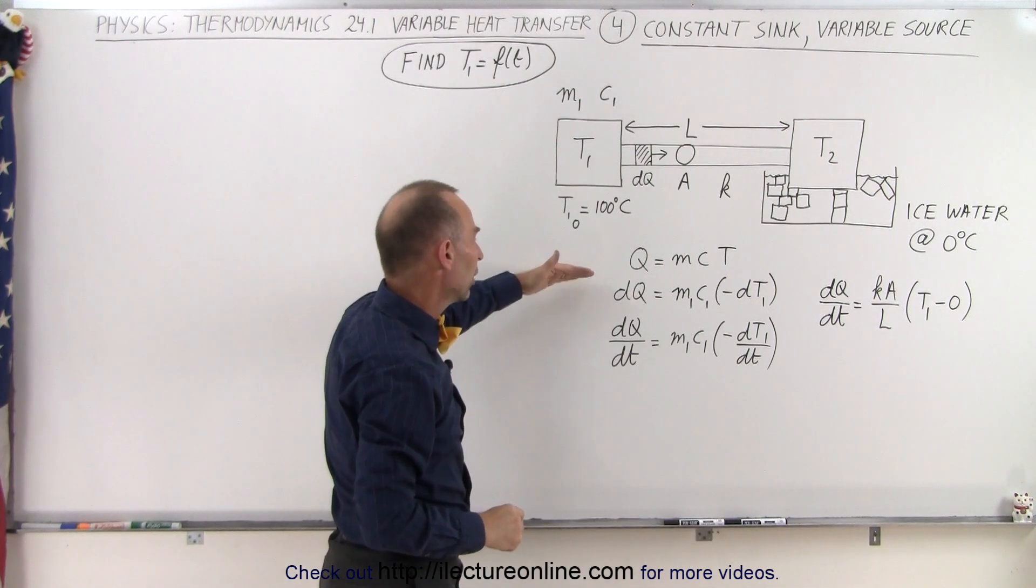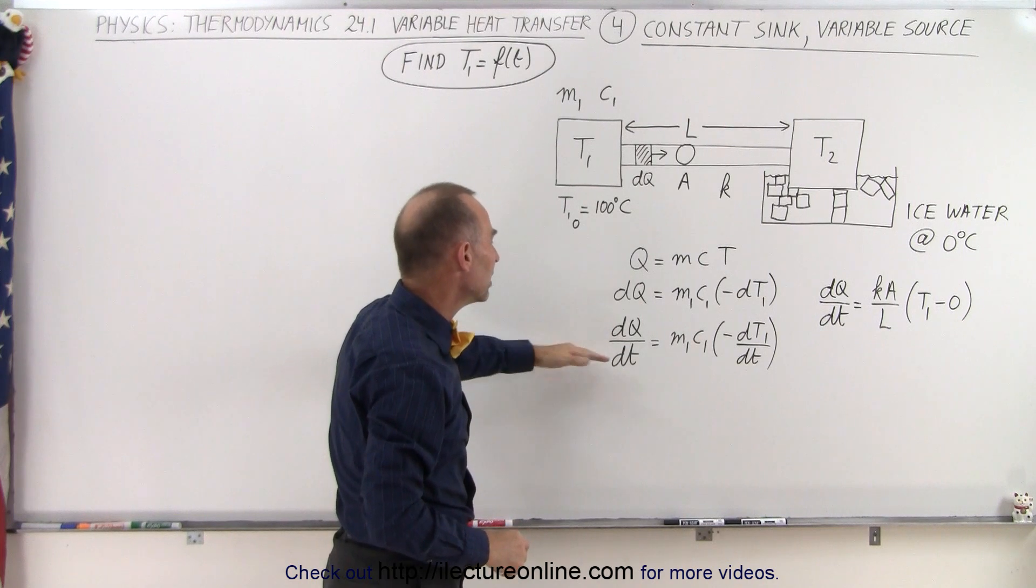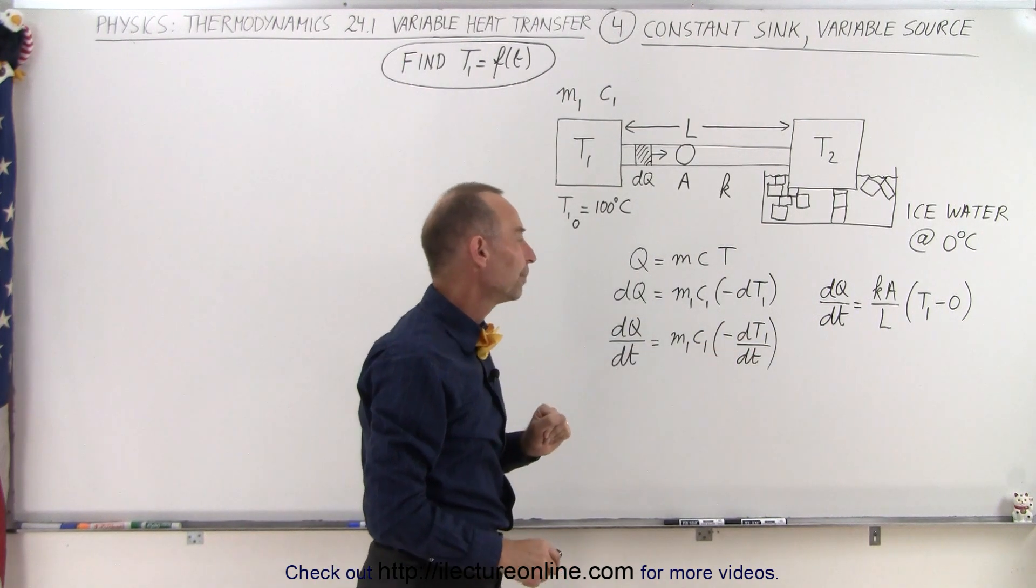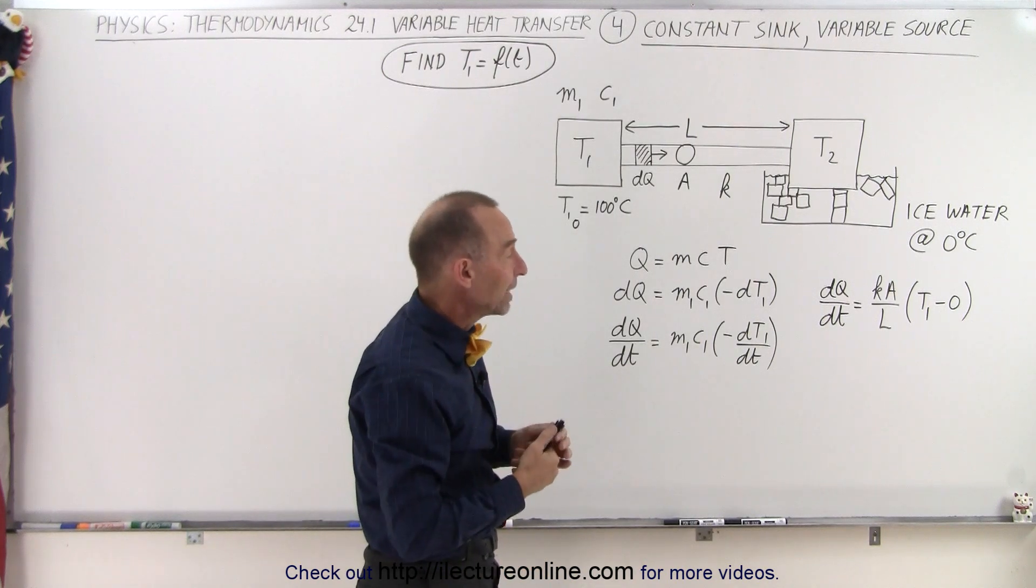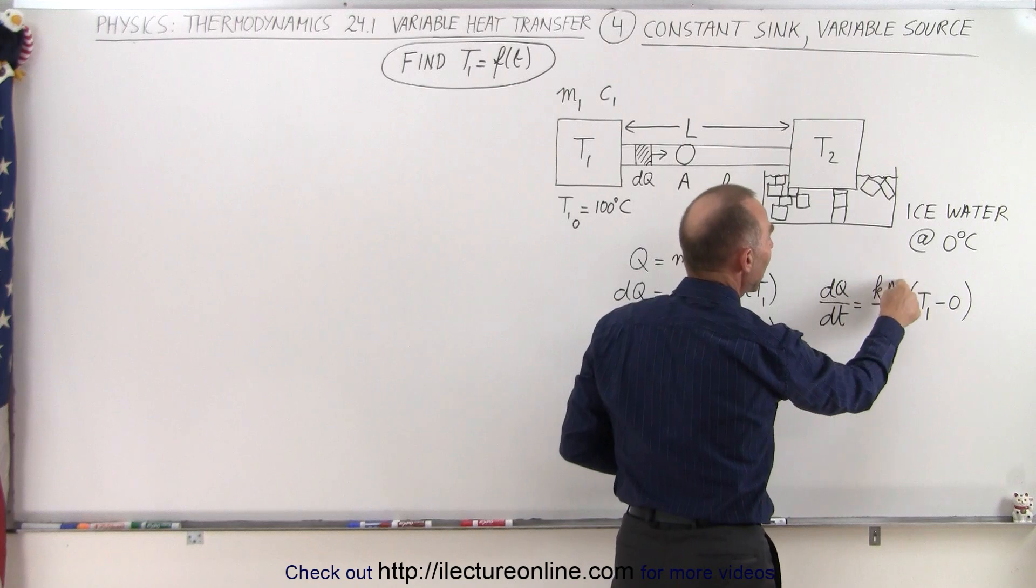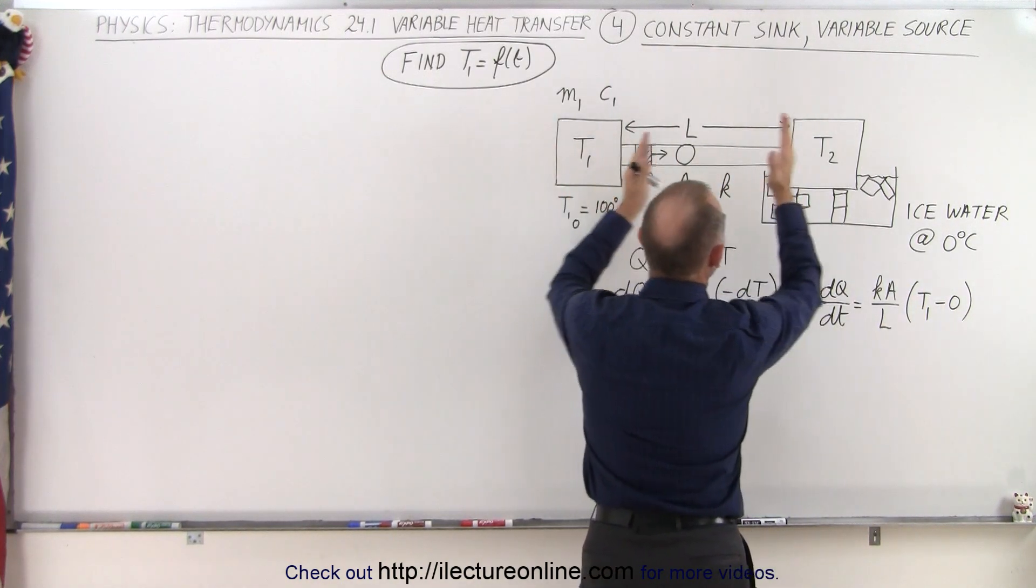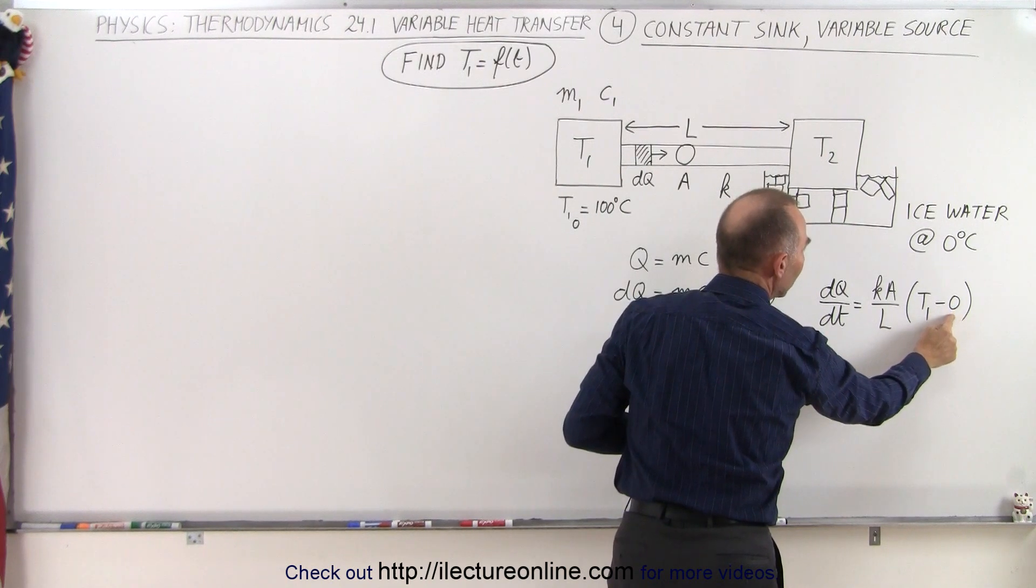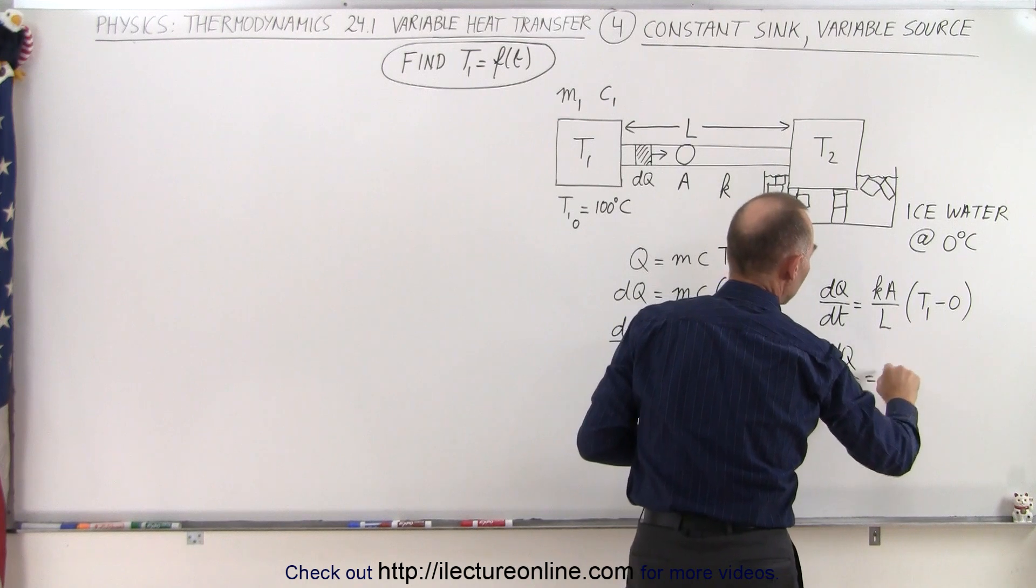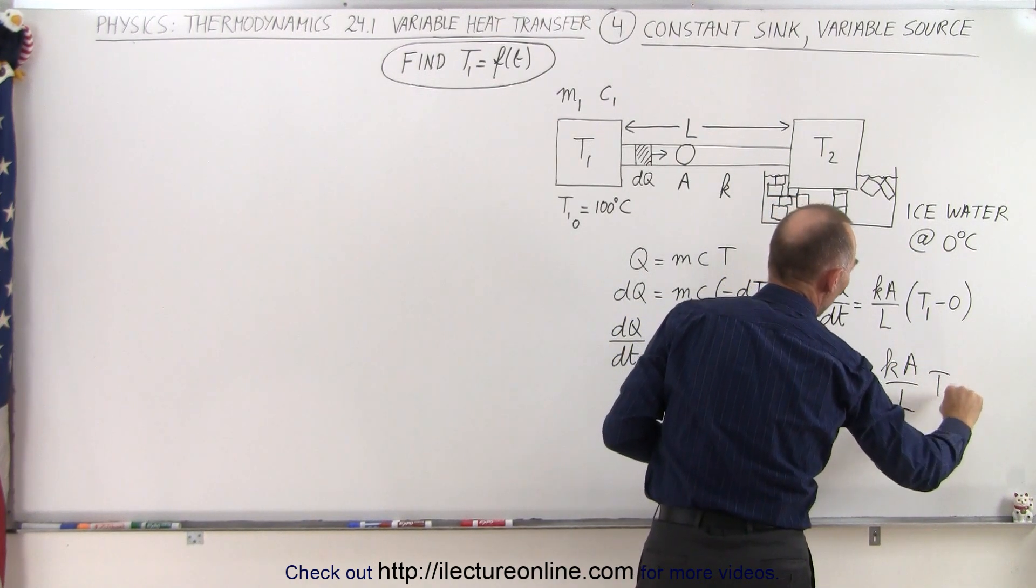And then if we turn that into a differential with respect to time, that becomes dQ dt is equal to M1C1 minus dt dt. We also have the heat transfer equation that tells us that dQ dt is equal to Ka over L times the difference in the temperature between the source and the sink. And since the sink is kept at zero, this simply becomes dQ dt is equal to Ka over L times T1.